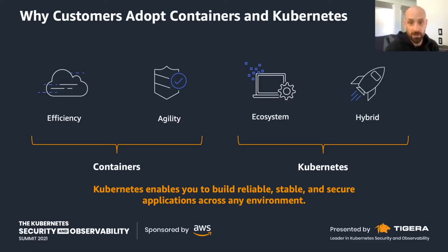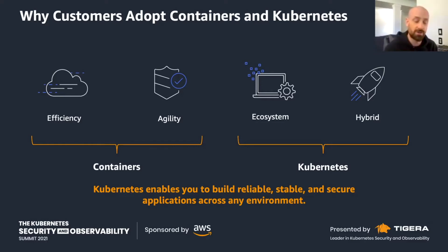Today's talk is about containers, observability, and security. To kick things off, why are customers adopting containers and Kubernetes? Starting with containers, first and foremost it's about efficiency and agility. Adopting containers is essentially forcing you to embrace automation. Automation increases speed and ease of testing when you're iterating on your applications. The goal is to move to a point where you have controlled and repeatable processes, dramatically increase product delivery, improve stability, quality, and security, and reduce operational burden by removing heavy lifting wherever you can.